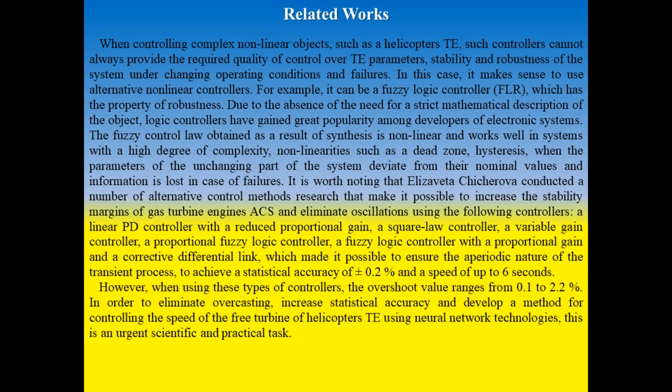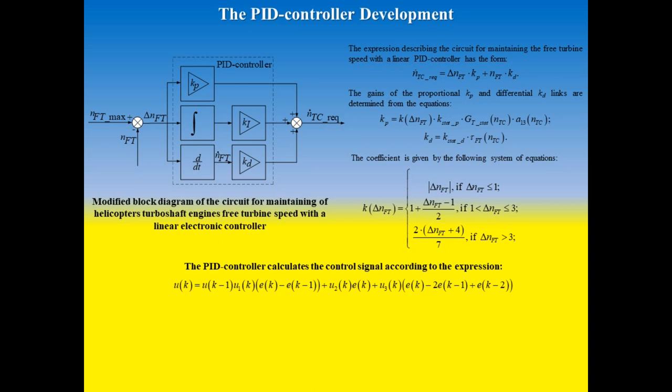This is an ongoing scientific and practical task. The main task of the automatic control system of helicopter's turboshaft engines is to maintain the rotational speed of the main rotor. This task is accomplished by controlling the free turbine speed through the required fuel flow rate.